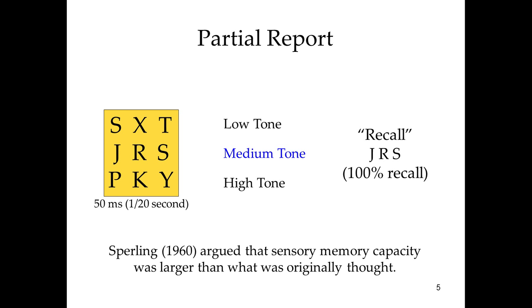If you do what's known as a partial report, Sperling found that if you phrase the question in a certain way, you actually improve recall. He flashed the image again for about 1/20th of a second, followed immediately by a specific tone. Participants were told beforehand that a low tone meant recall the top line, medium tone the middle line, and high tone the bottom line. Presentation followed immediately by the specific tone resulted in 100% recall. This means our sensory memory is actually pretty impressive — it just doesn't last very long.